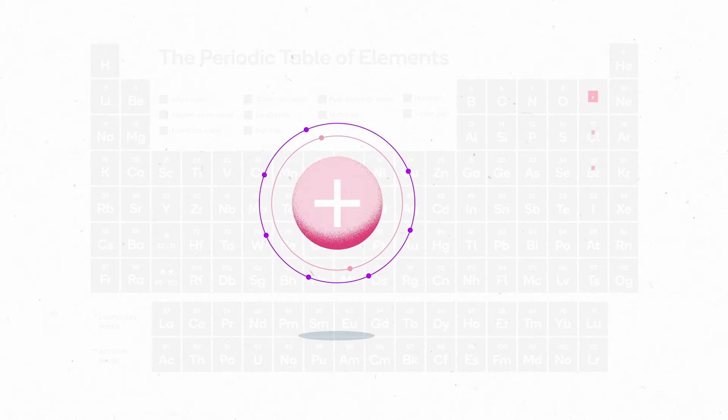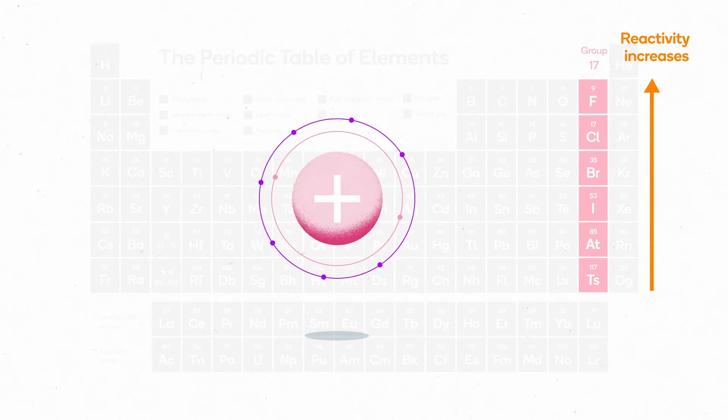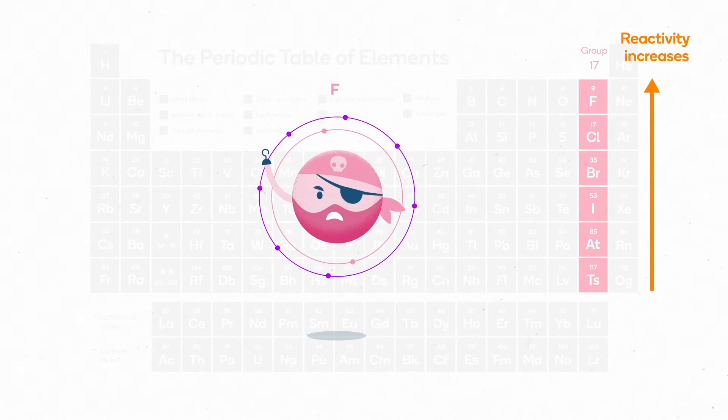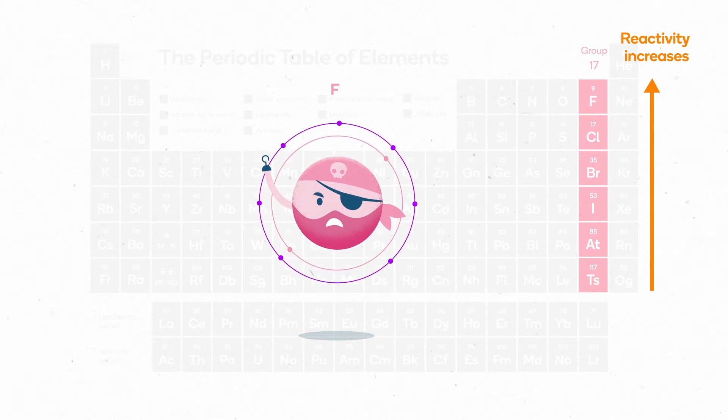Atomic radius increases downwards through group 17, so reactivity increases upwards. This makes fluorine the most reactive element in this group.